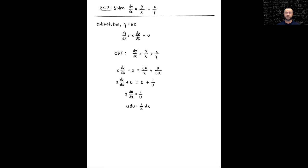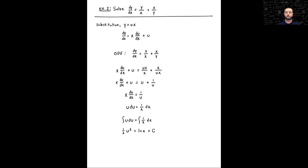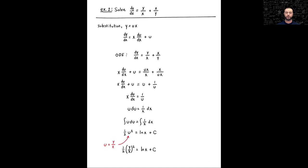The ODE has now been properly separated in terms of u and x. We just need to integrate both sides — the left side with respect to u, the right side with respect to x. We're practically done. In order to get back in terms of our original function y as a function of x, we substitute u as y over x and get our implicit solution for example 2. There were no complicated integrations required. Example 3 will incorporate that, where the resulting integrals might be a little more challenging.